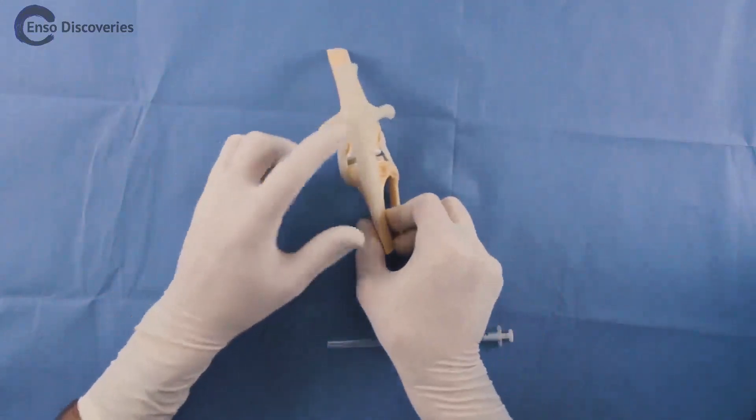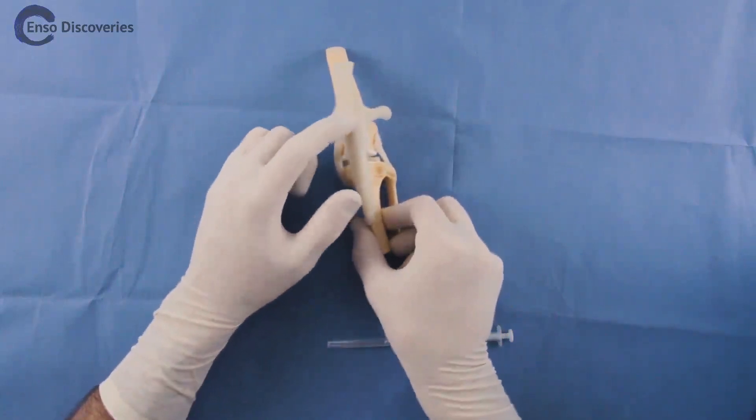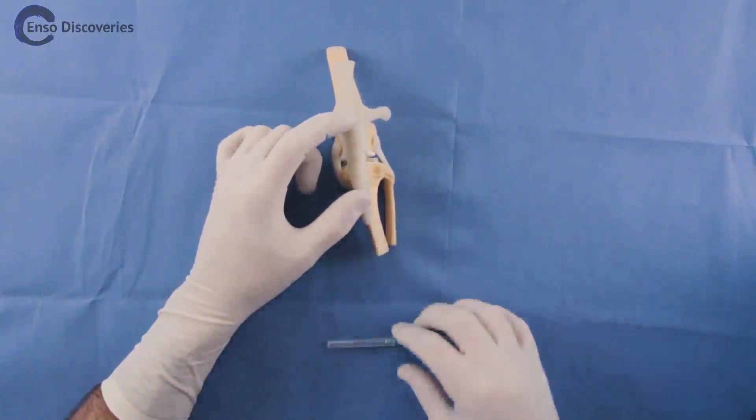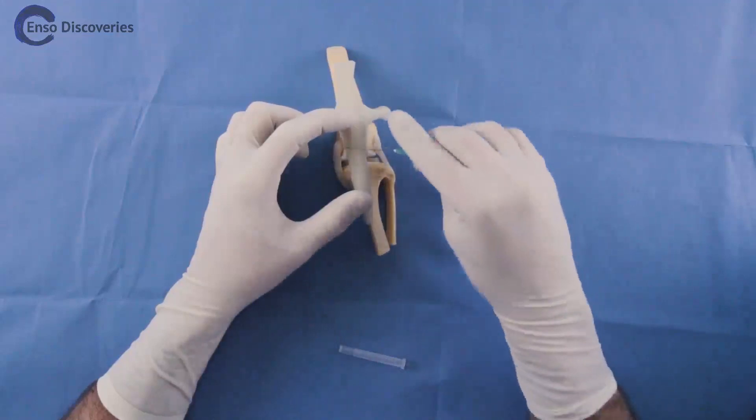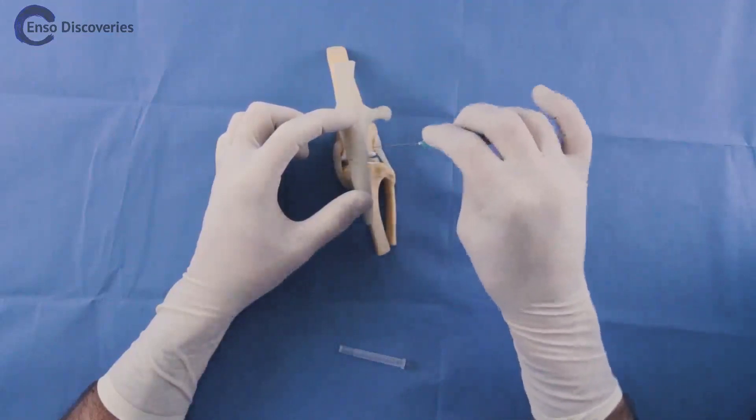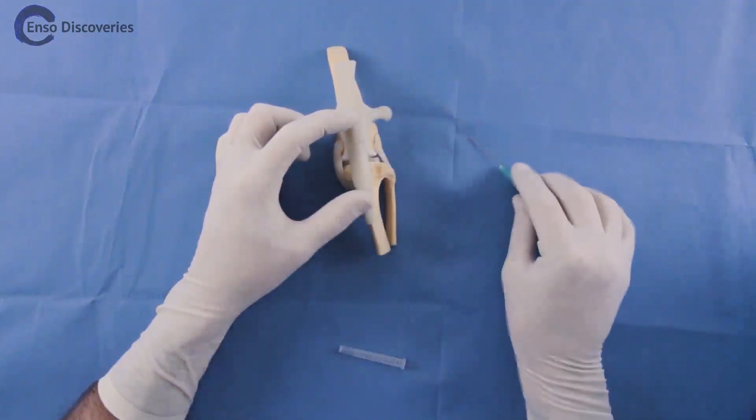The landmarks for the stifle injection are the distal aspect of the patella and the tibial tuberosity. The injection site is halfway between these landmarks and either medial or lateral to the patellar tendon.